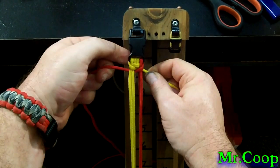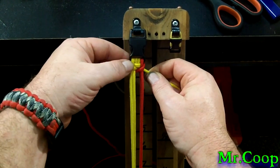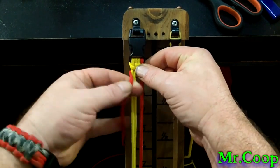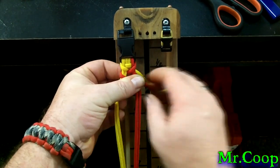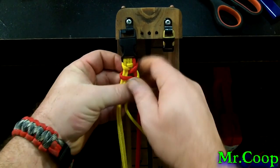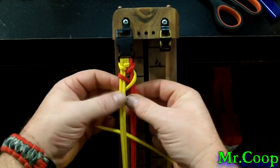So since I started on the left side first, we're going to start on the left side again. You just take the red over, through, yellow, over, through, just like so.